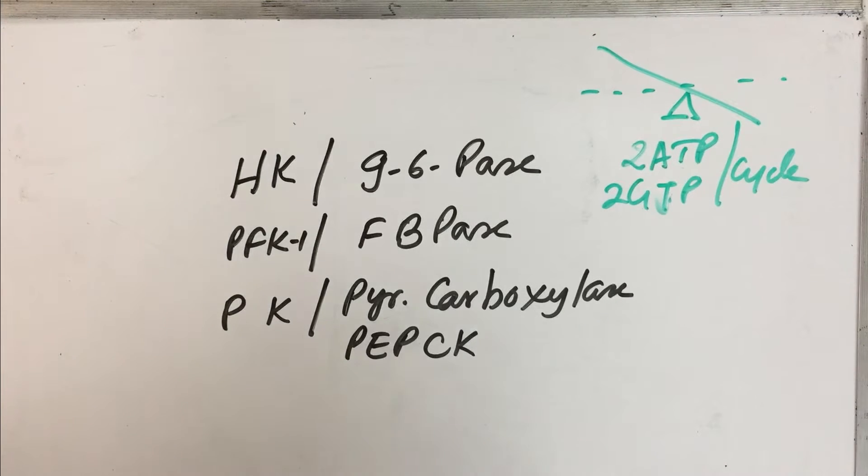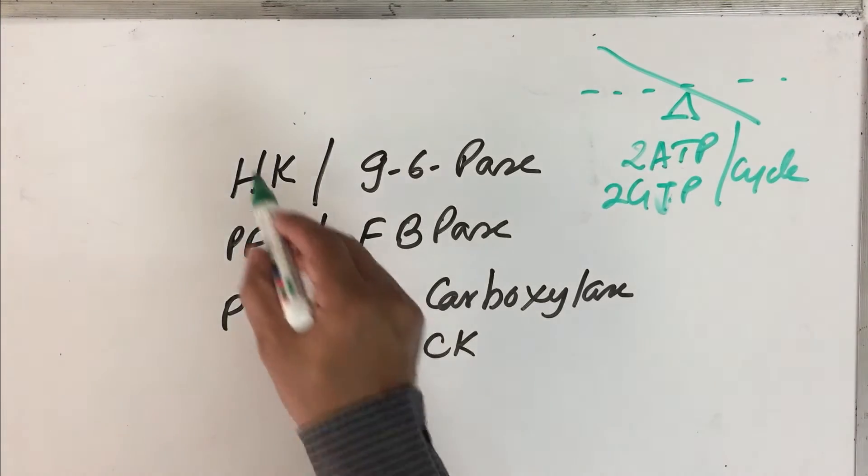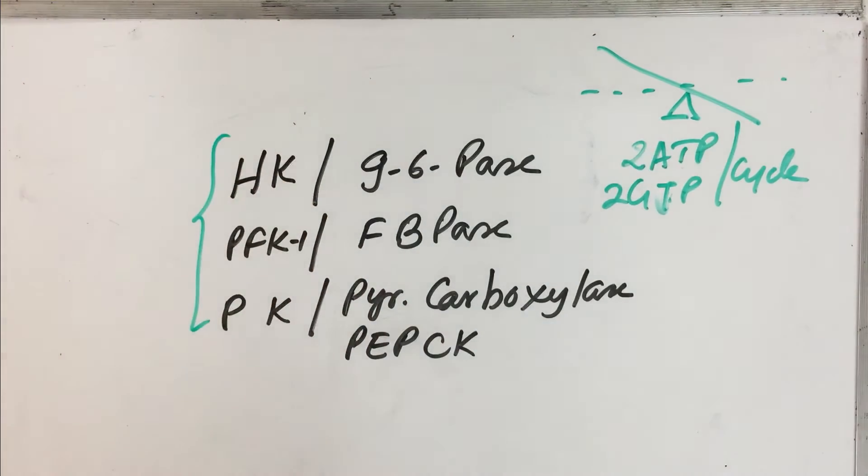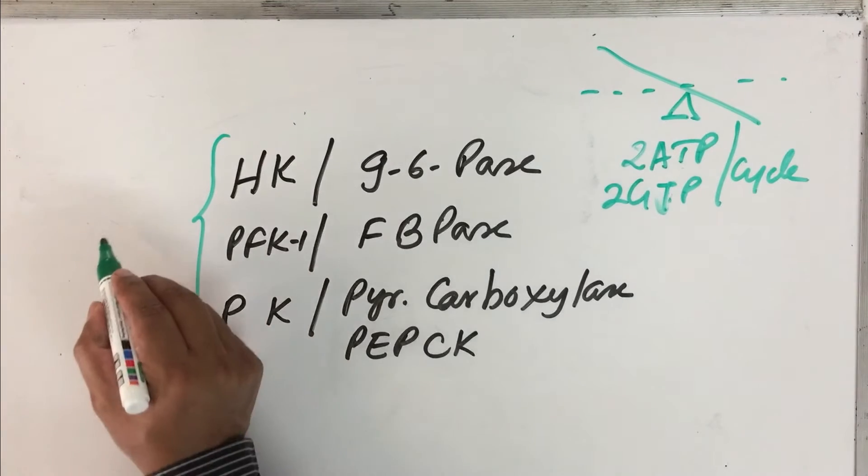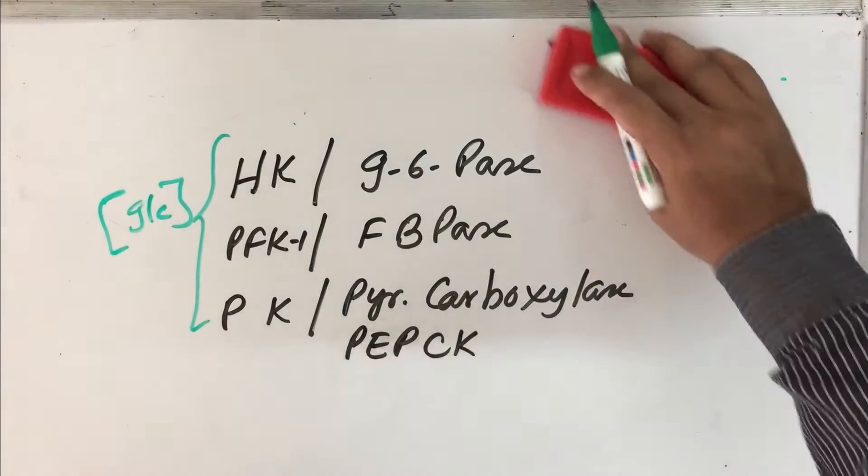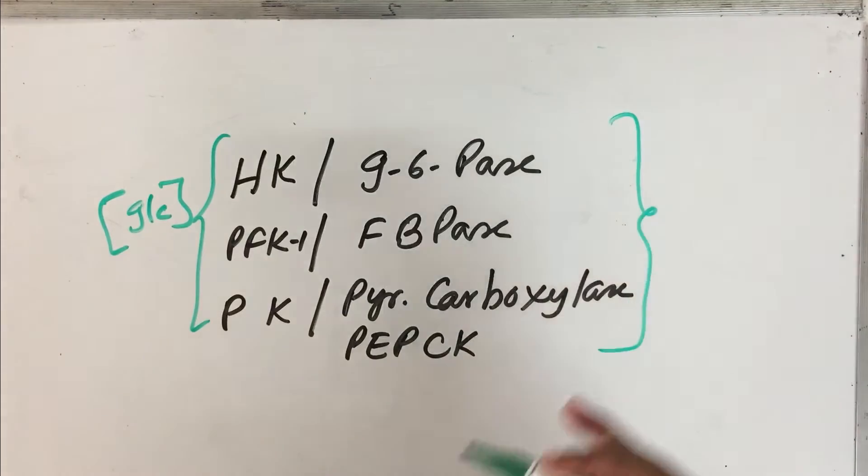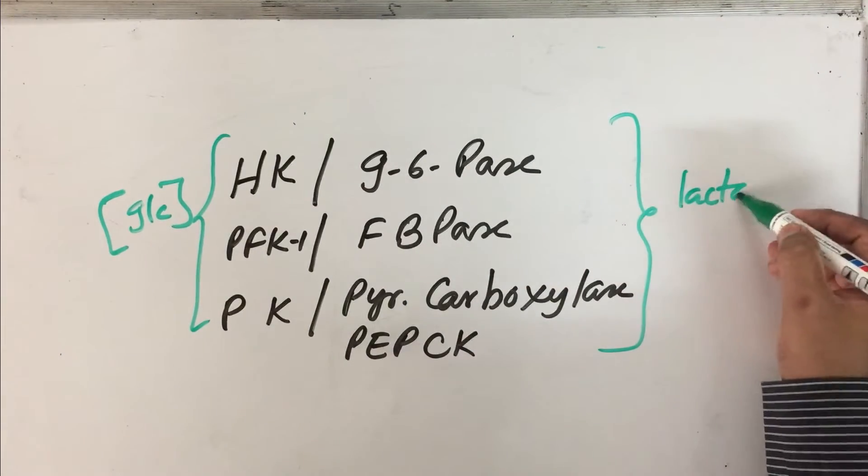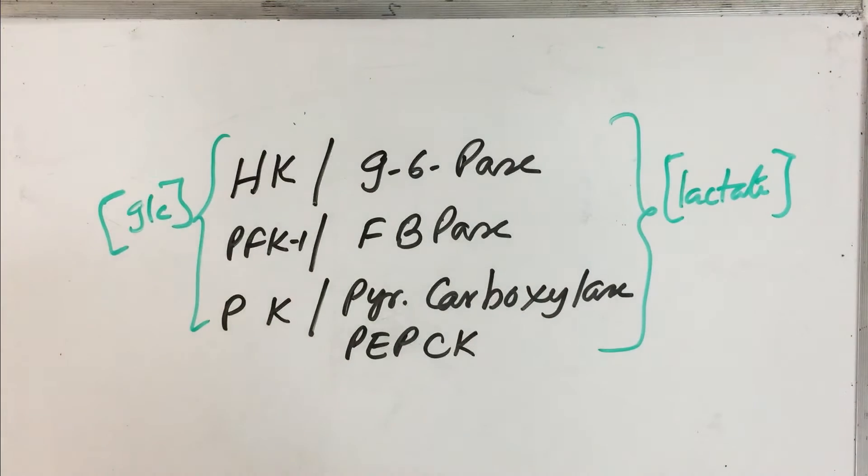Remember, both pathways are highly exergonic under cellular conditions. These are enzymes related to glycolysis. The rate of glycolysis is actually regulated by the concentration of glucose in the cell, and the rate of gluconeogenesis is regulated by the concentration of lactate and other precursor molecules. Also remember that in a well-fed state, when the glucose level is high, fuel conservation should be promoted.